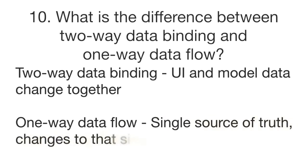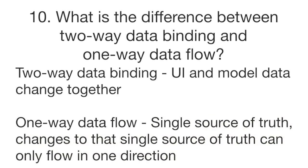Question number ten: what is the difference between two-way data binding and one-way data flow? Two-way data binding means that UI fields like inputs are bound to the model data such that when either changes the other updates too — but this can cause side effects that are difficult to debug. One-way data flow means there is a single source of truth and changes can only flow in one direction, making it easier to understand and debug. React Redux is a good example of a pattern that uses one-way data flow.